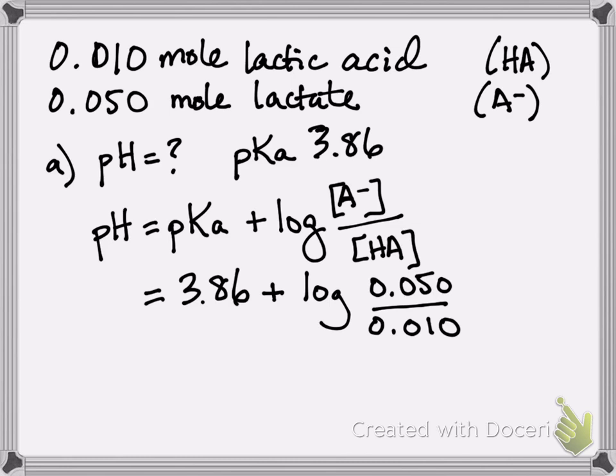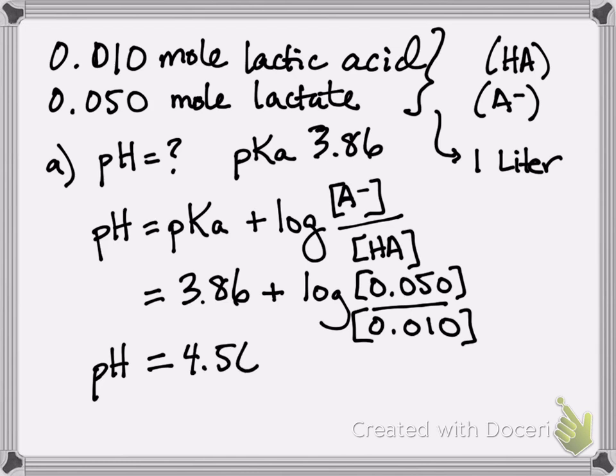And what I forgot to write up here is that these are both put in one liter. So when you do the math, you end up getting a pH of 4.56. So this is your pH for your buffer system before you've done anything to it.